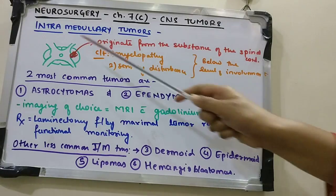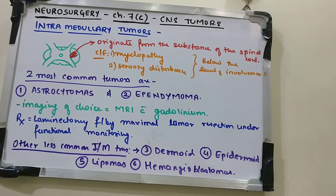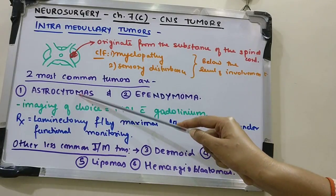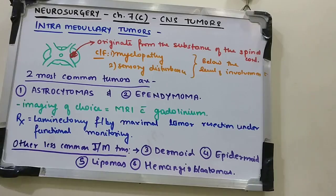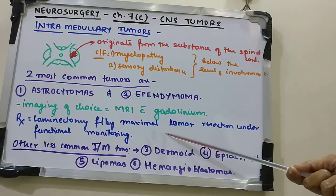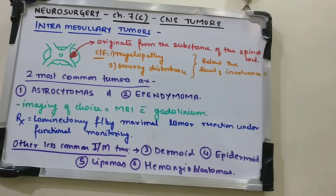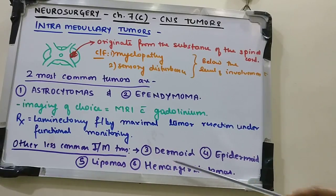Intramedullary tumors originate from the substance of the spinal cord, and patients typically experience myelopathy and sensory disturbances below the level of involvement. The two most common types are astrocytomas and ependymomas. The preferred investigation is MRI with gadolinium. Treatment is laminectomy followed by maximal tumor resection without causing significant neurological deficit, under functional monitoring. Less common intramedullary tumors include dermoid and epidermoid neoplasms, lipomas, and hemangioblastomas.